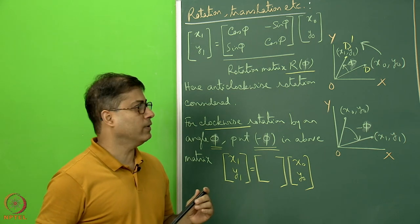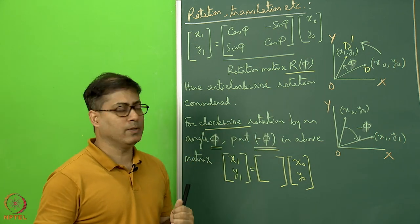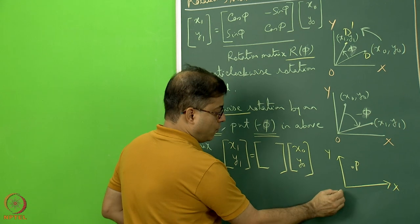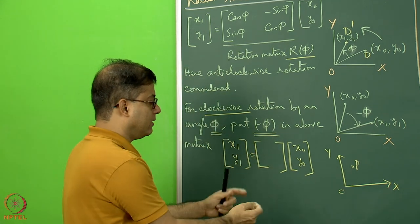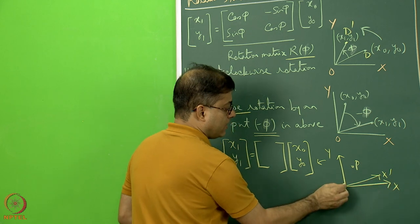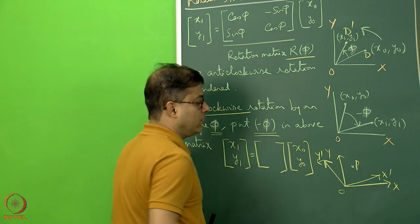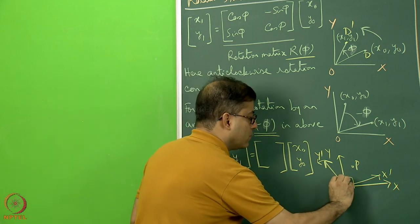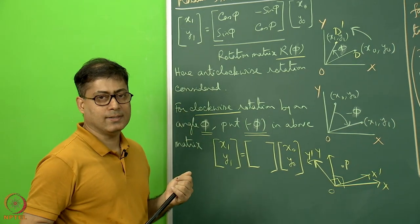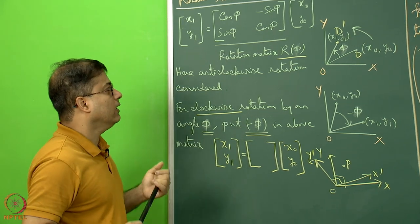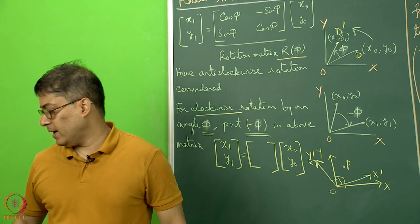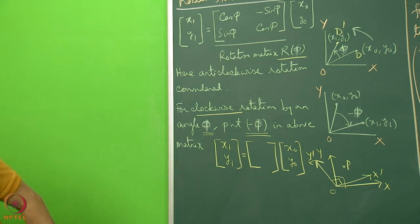Students may be aware of a similar case when the coordinate axis rotates and the point gets a new coordinate. Suppose the OXY coordinate system rotates anti-clockwise by angle theta, giving new axes X-dash and Y-dash, still maintaining 90 degrees between them. The point P's coordinates change accordingly and can be written in a similar matrix format. Be very clear: here we are talking about the material point actually rotating, not the coordinate axis rotating.